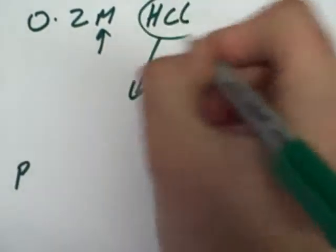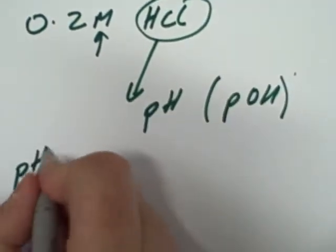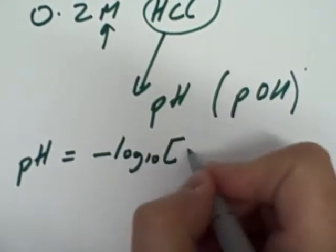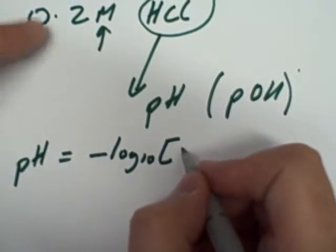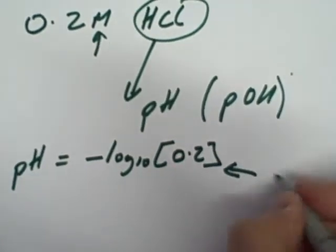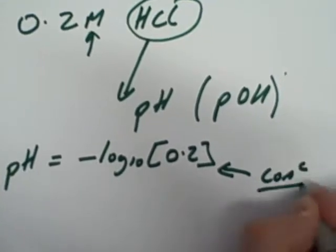It's 0.2 molar. Remember, strong acid, I'm thinking straight away, full dissociation, so pH equals minus log to the base 10, concentration of my acid. Now, I know it's 0.2 molar, so that's easy enough. Remember those square brackets means concentration.